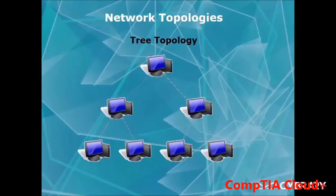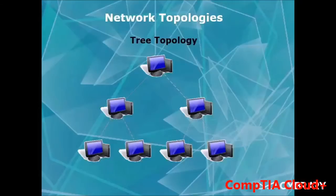The last topology is Tree topology. The purpose behind a tree topology is a hierarchical structure that allows everybody to be connected while giving a central node for each hub. It's basically like a star connected to a star, connected to a star. Bottom computers pass information to their parent, which passes it to the next parent. However, if one node goes down, that whole branch goes down — and if the top node goes down, all connectivity stops.